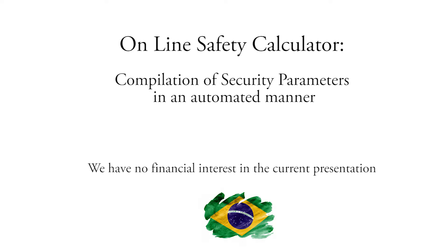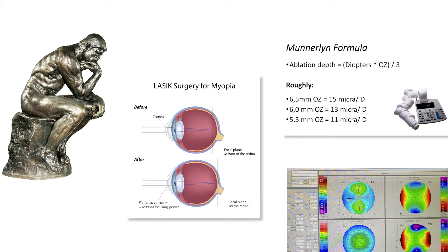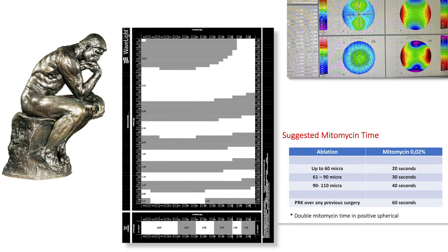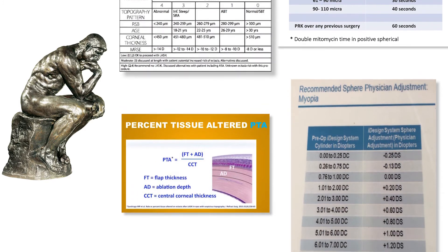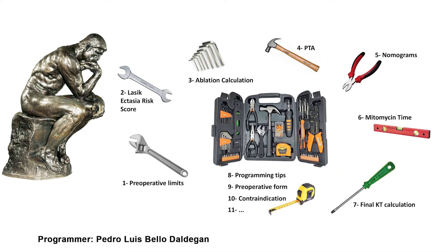Refractive Surgery Online Safety Calculator — promoting faster and easier preoperative calculations. When evaluating a candidate for refractive surgery, the surgeon must perform a considerable amount of calculations to assess viability and safety level. What is the expected PTA? Is the predicted final keratometry adequate? And what about the nomogram or the mitomycin use time interval? Why not automate it all? That is the main idea of this software — a real toolbox that comprises a wide range of features.